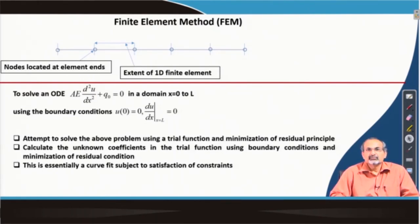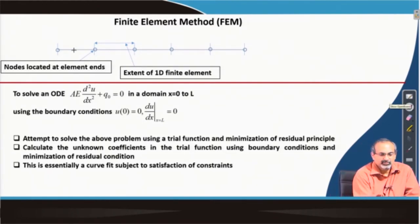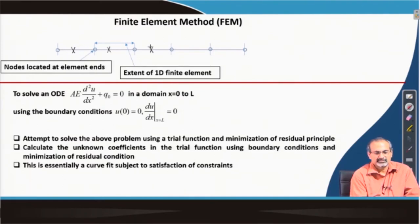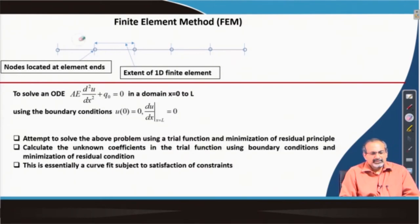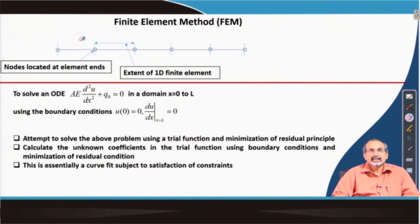In the finite volume method, it was the central point which we were talking about as nodes. So in the finite volume situation, we had nodes like this. In the finite element technique, we are talking about the end points of these segments as the nodes. And these segments, which we called as finite volumes, are here called as finite elements.